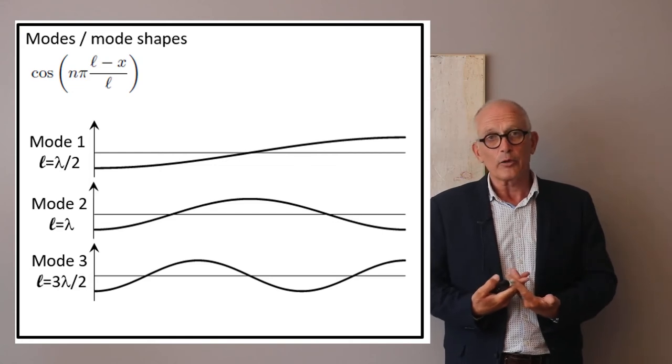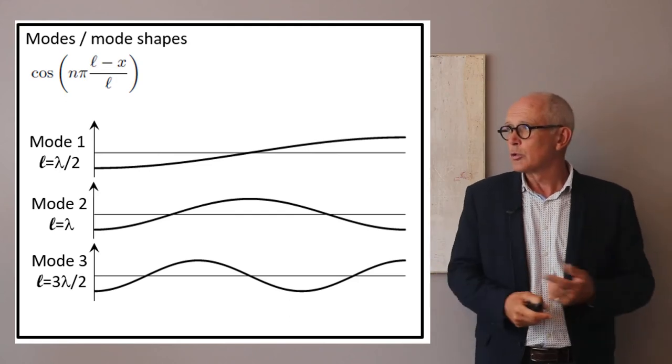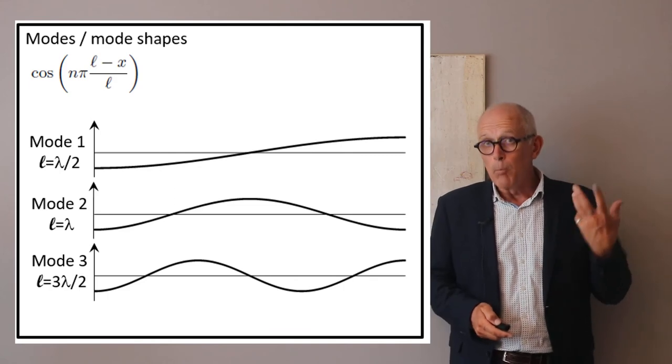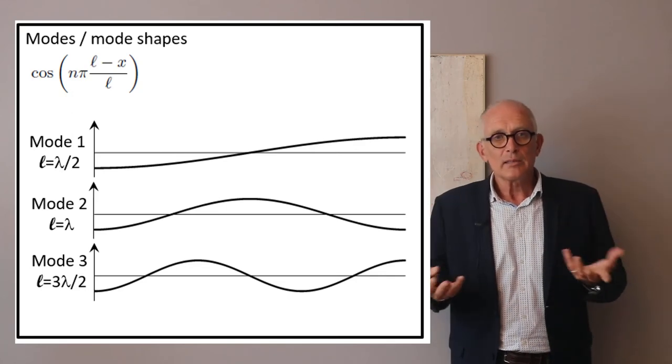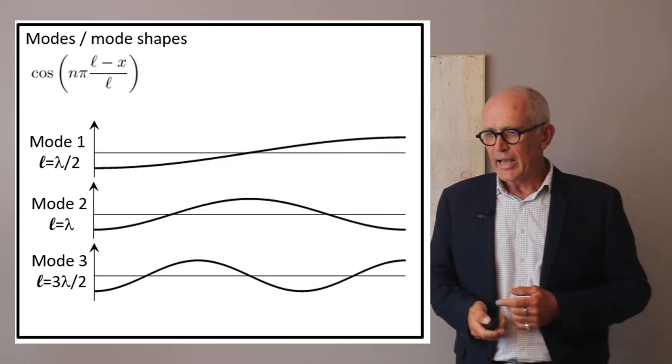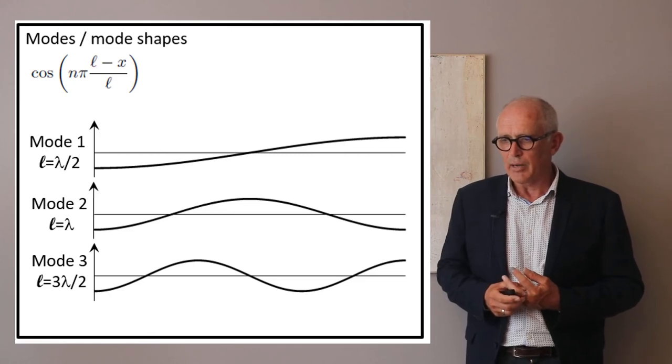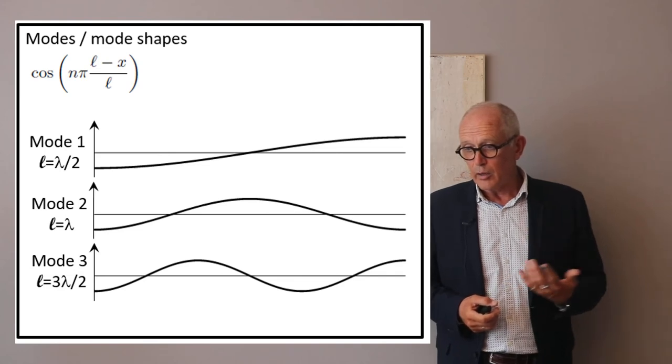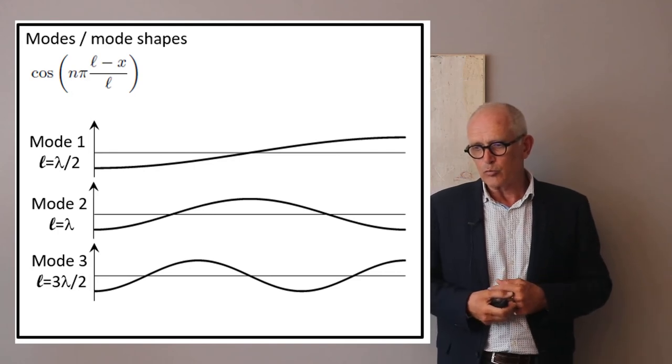The numerator is also interesting. Cosine K(L minus X) will define a certain shape of the displacement, a certain distribution of the displacement in the tube. These are the modes. To each resonance frequency corresponds a certain way, a certain distribution of pressure, a certain distribution of displacement in the bar, defined as cosine K(L minus X). For the first frequency, when the length equals one half wavelength, we have a certain pressure or displacement distribution.